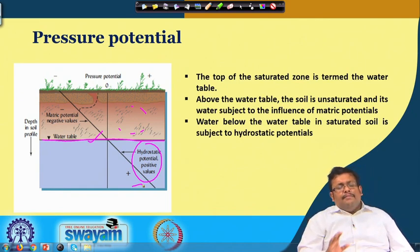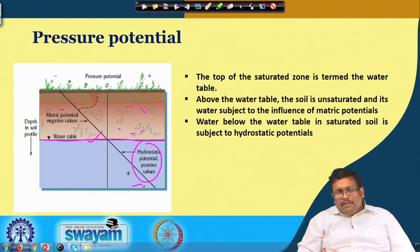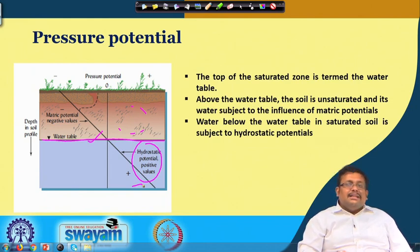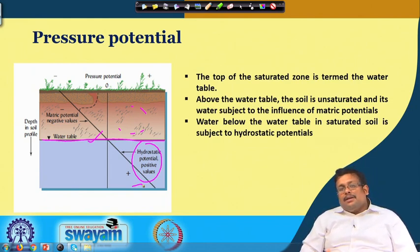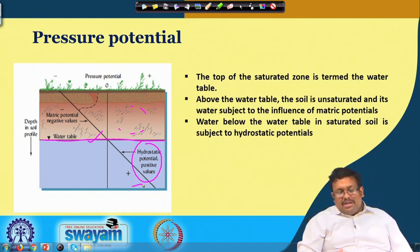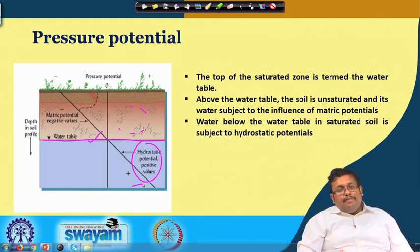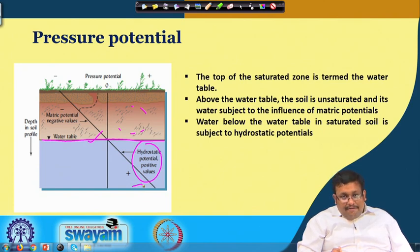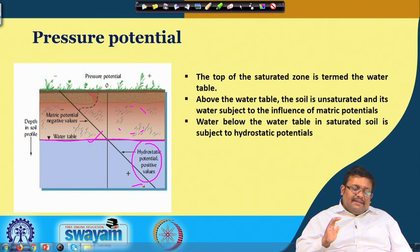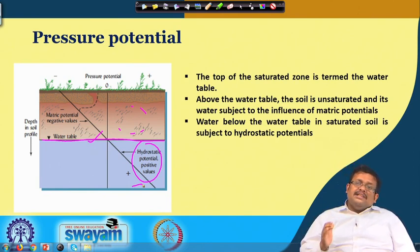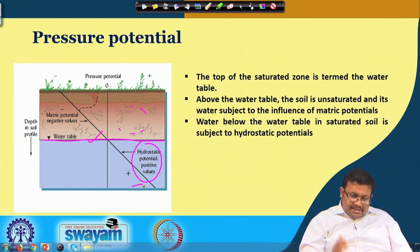Pressure potential combines two different potentials: hydrostatic potential and matric potential. Hydrostatic potential can only be found at a level below the water table and is always positive. However, matric potential is always negative.